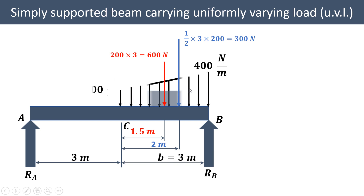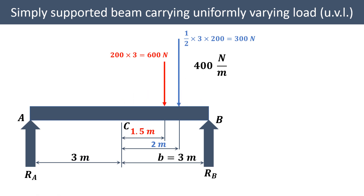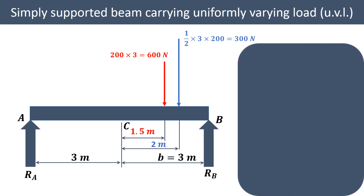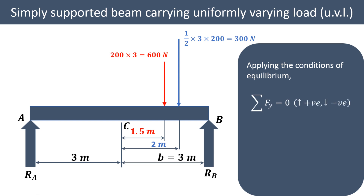We have now converted the UDL and UVL each into a point load. Our next job is to find the beam reactions by applying the conditions of equilibrium. The first condition is summation of forces in the Y direction equals zero. RA and RB act upward while the 600 N and 300 N forces act downward, giving us RA + RB = 900 Newton — call this equation one.